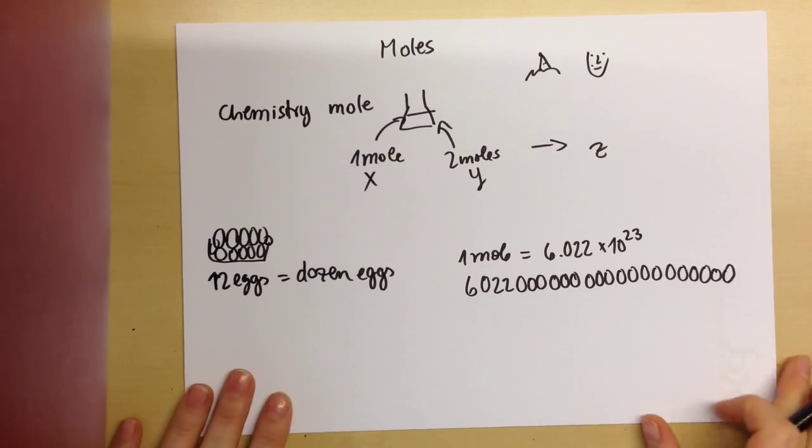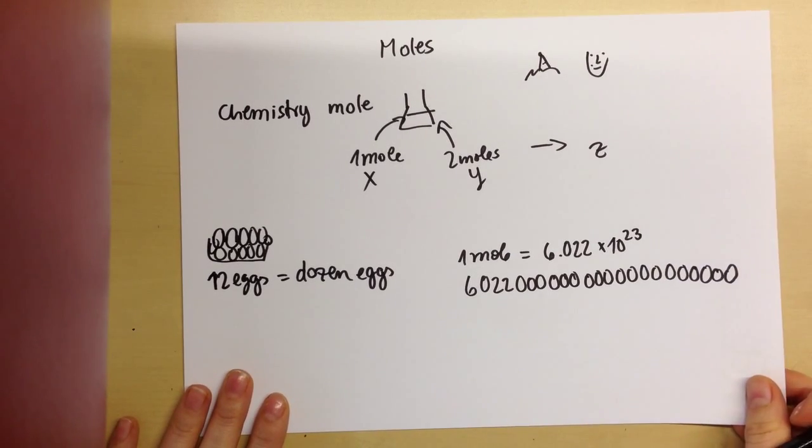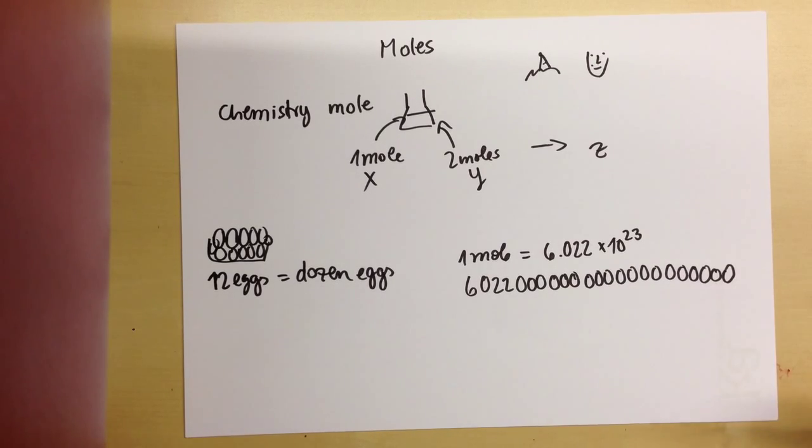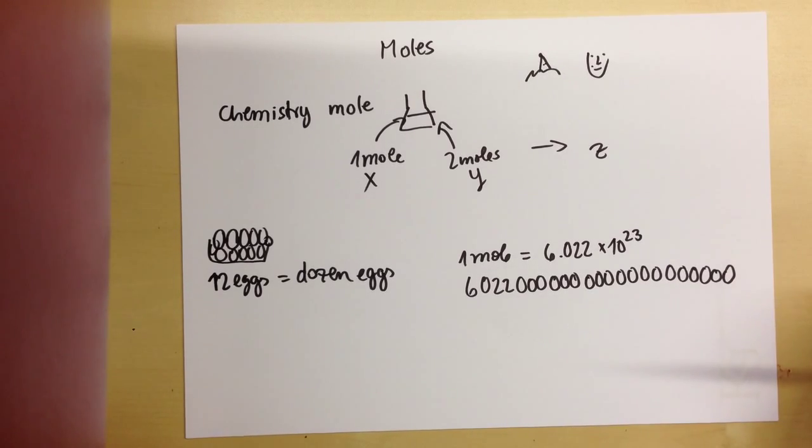And this is the easier way to write it, and that's the way we use it. So, of course, it's not just randomly that number. There's a specific reason. And to understand that, we have to look at the weight of one atom. So because this is basically what we're talking about.